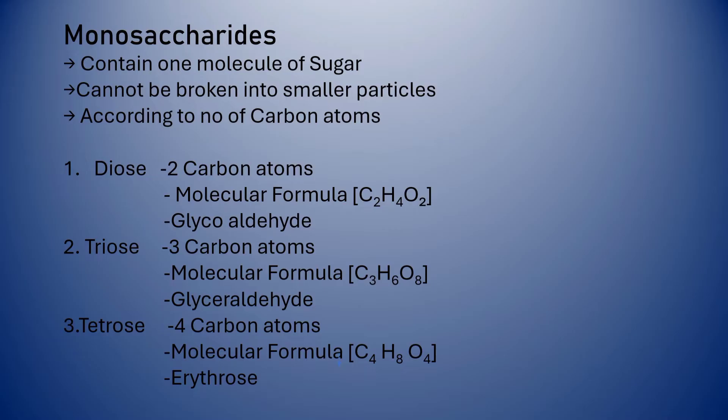According to the number of carbon atoms, monosaccharides are classified into diose, triose, tetrose, pentose, hexose, and heptose. As we all know, di means two, tri means three, and likewise for the others.